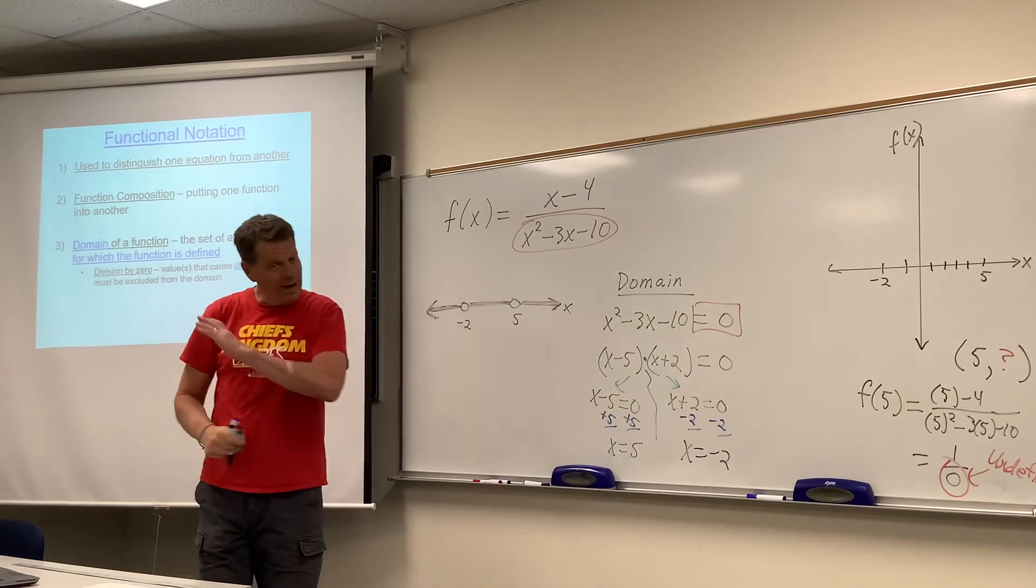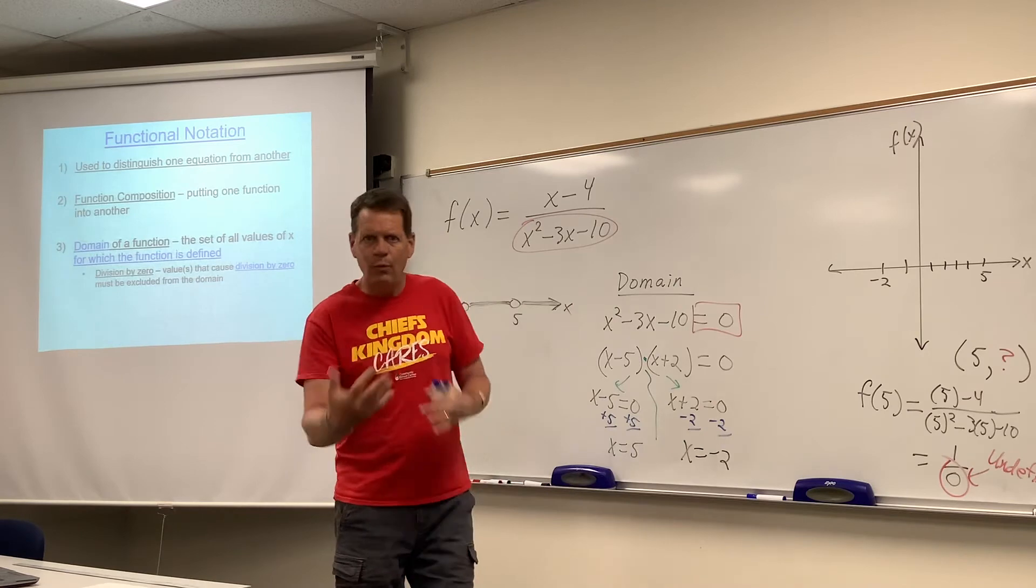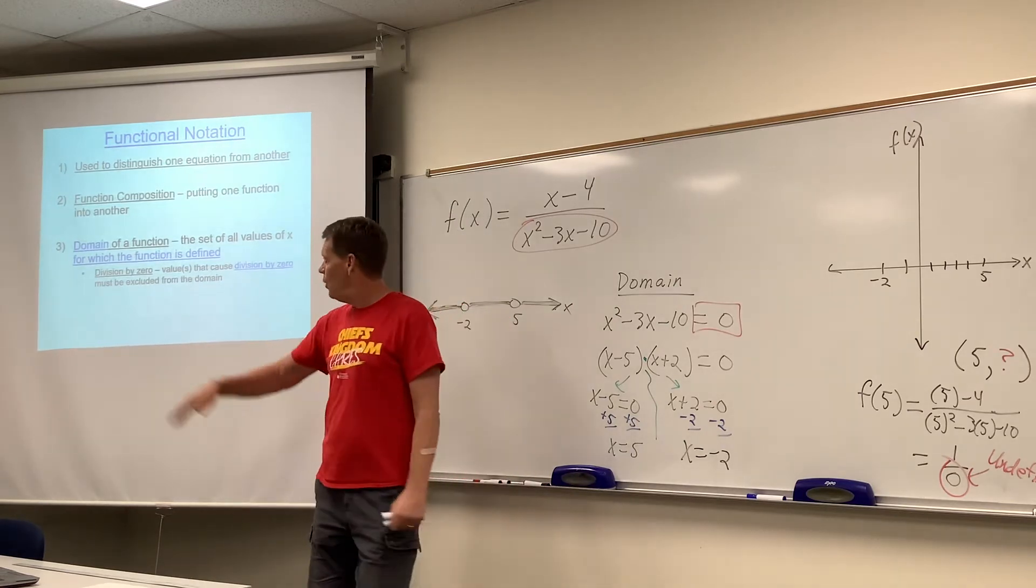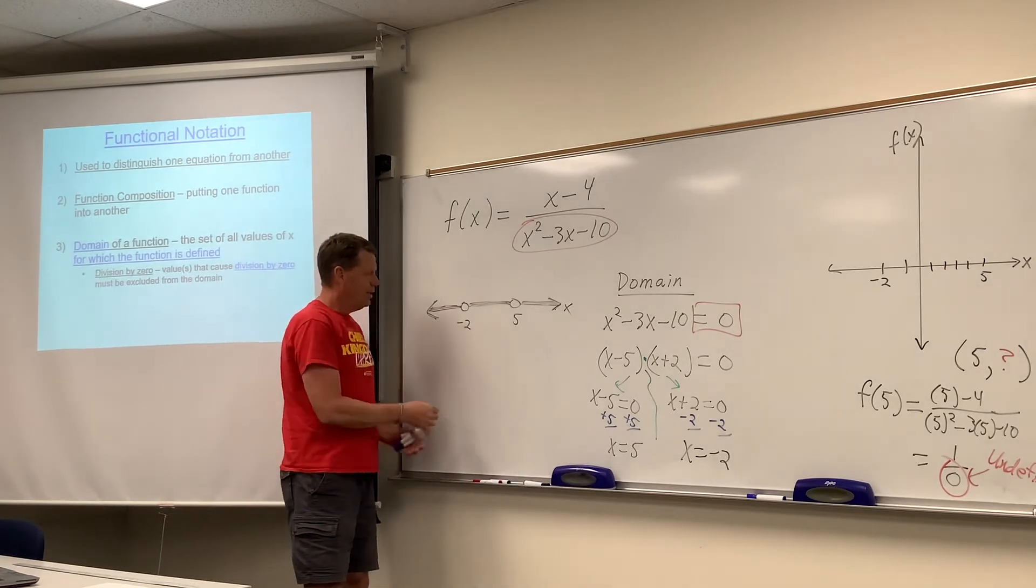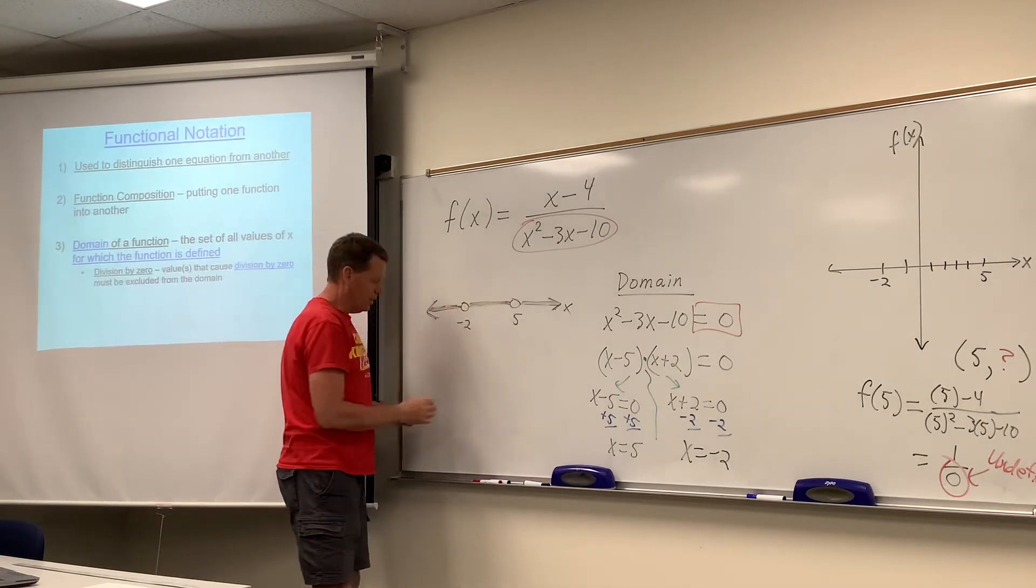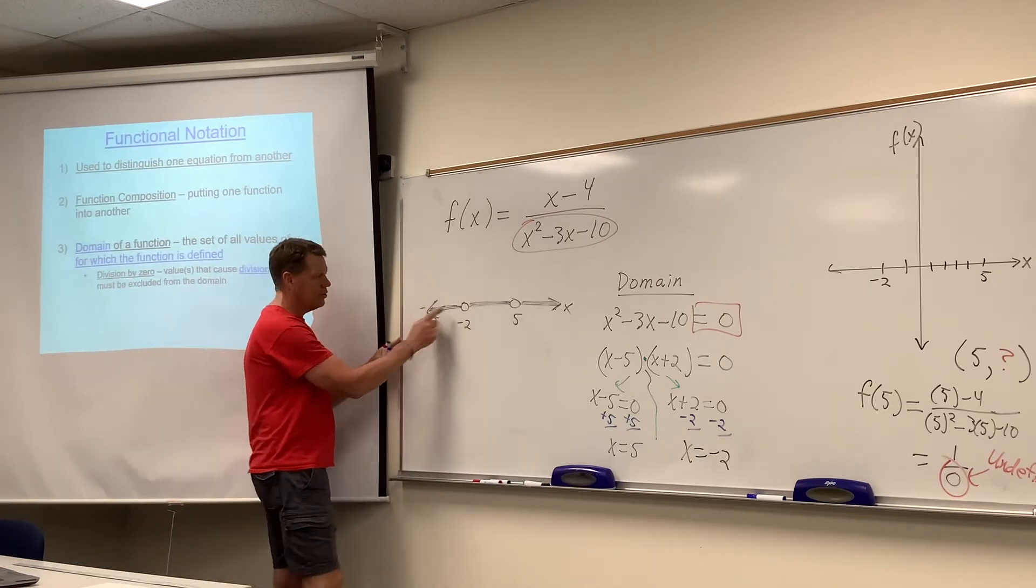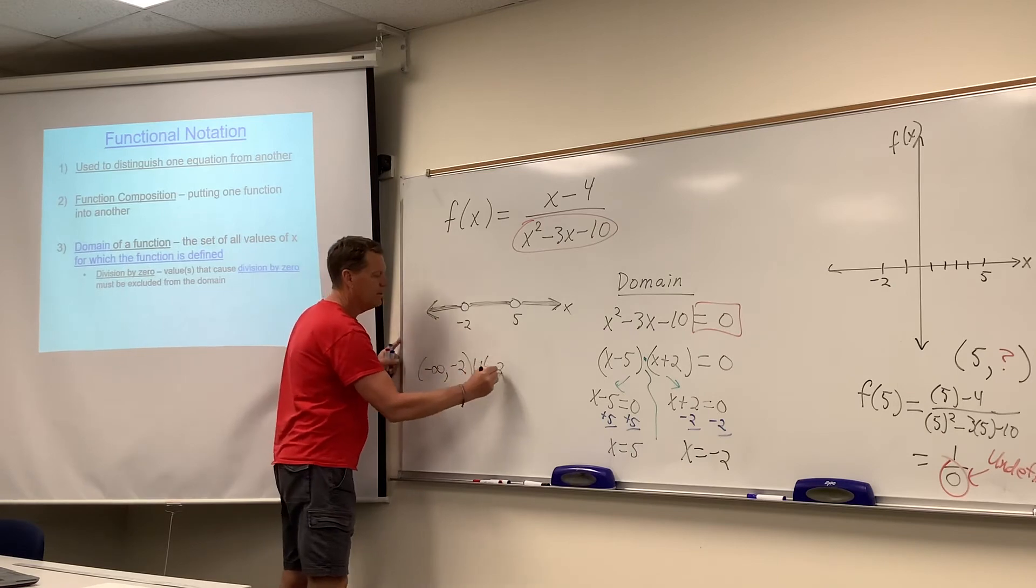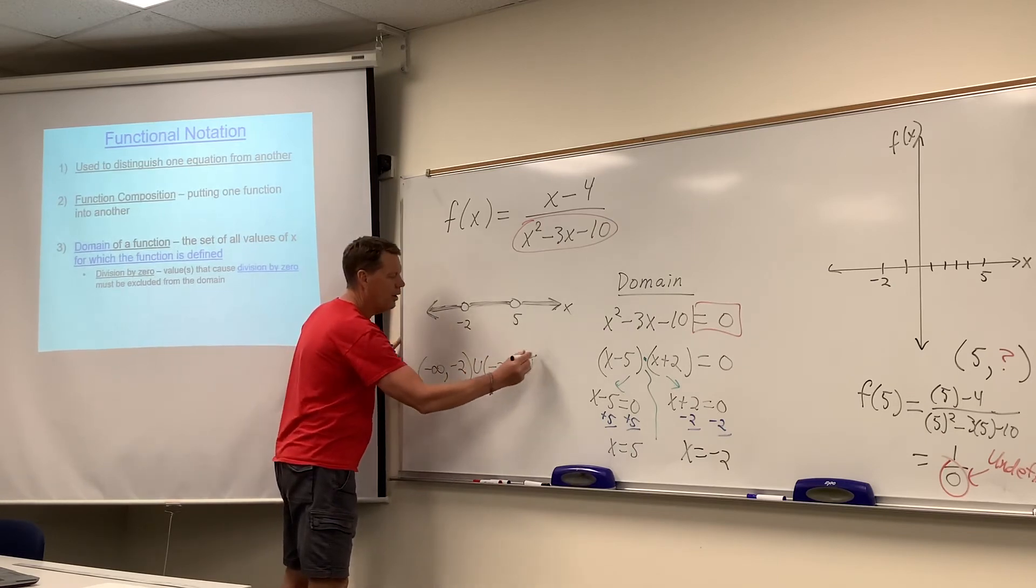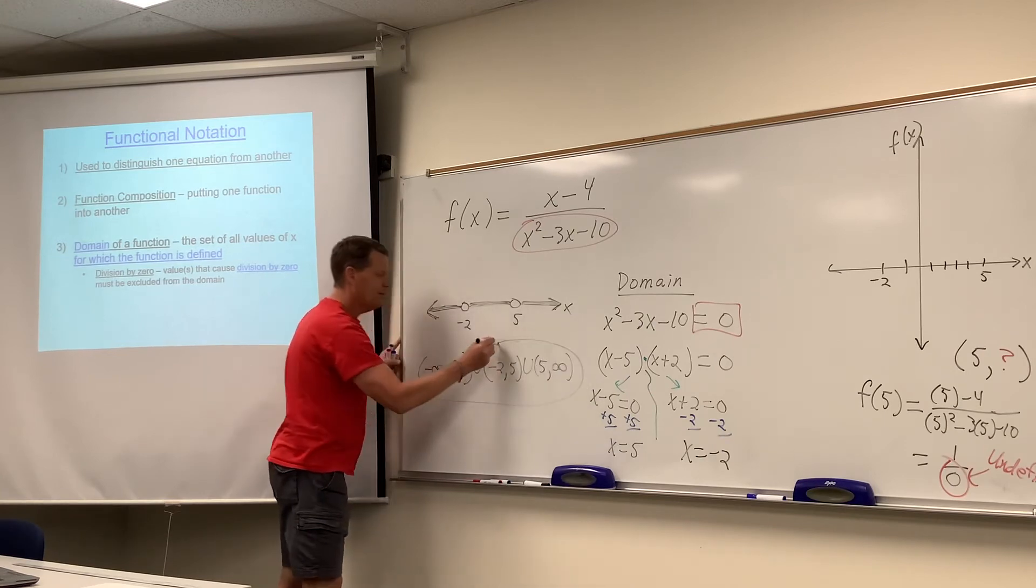We don't have to test anything here. This isn't to be confused with assignment 16 where we play the dating game. We just go, you know what? If you're a number that causes division by zero, you ain't my domain. And you toss them out. That's a picture of a number line with those two excluded. And so in interval notation, as it said in the instructions, our domain would be negative infinity to negative two excluded, or negative two to five, or five to infinity. And there's your domain in interval notation as it wanted.